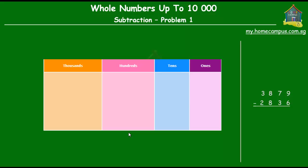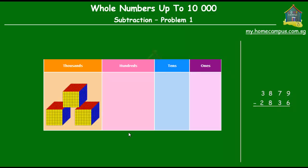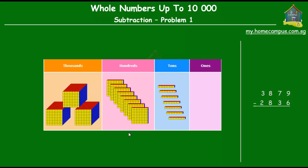So my first number or my bigger number actually is 3879, and that I put in the place value chart here. So there are 3 thousands, 8 hundreds, 7 tens, and 9 ones.